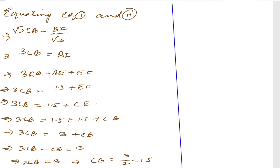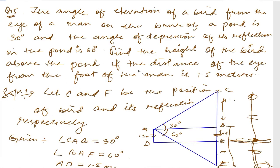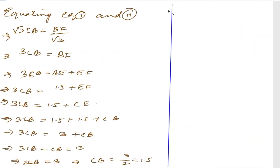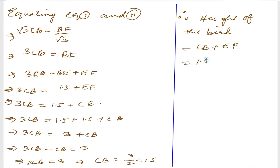We need to find the height of the bird. The height of the bird equals CB plus EF, where CB is 1.5 meters and EF is also 1.5 meters, which equals 3 meters. This is your answer. Thank you so much, we will meet in the next video.